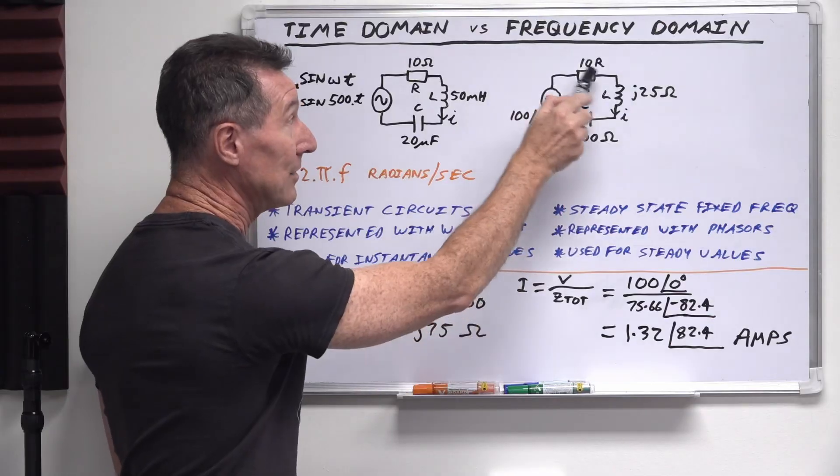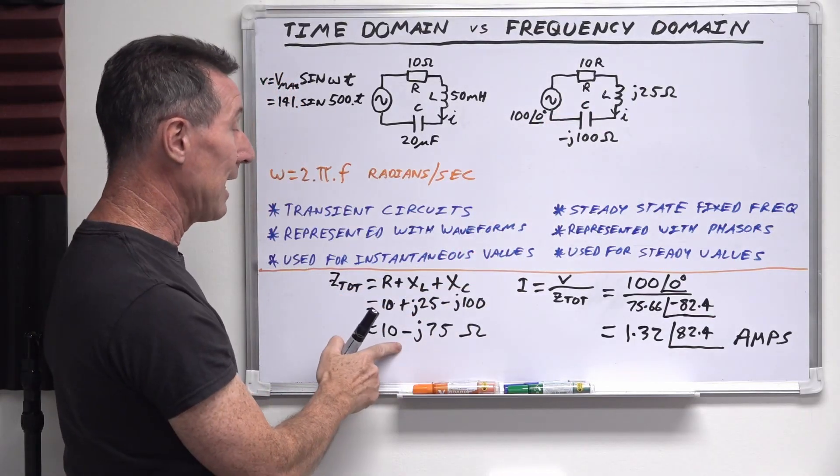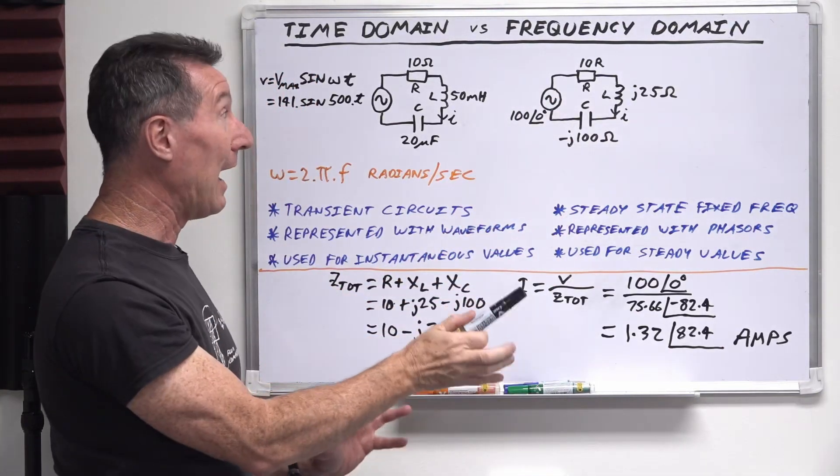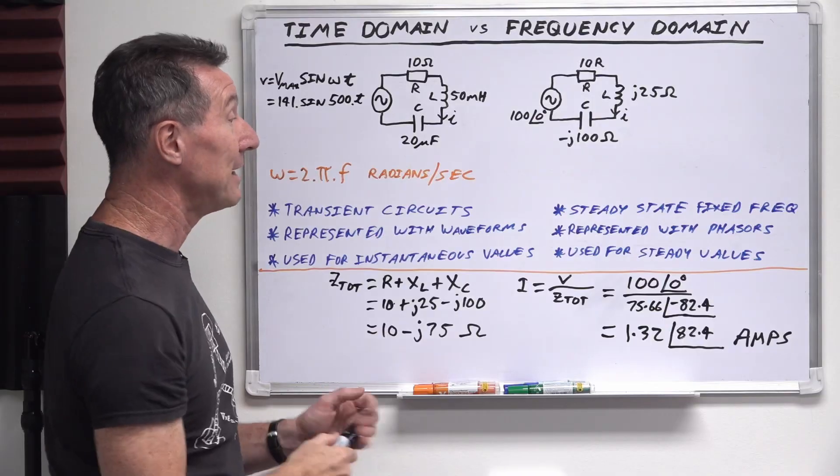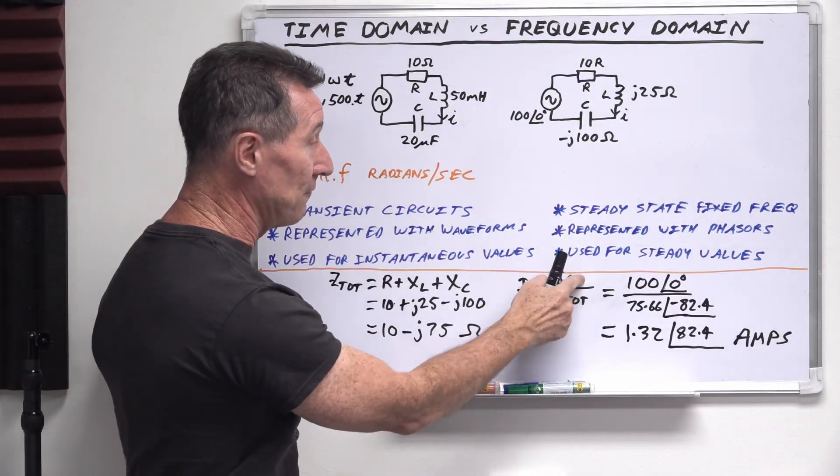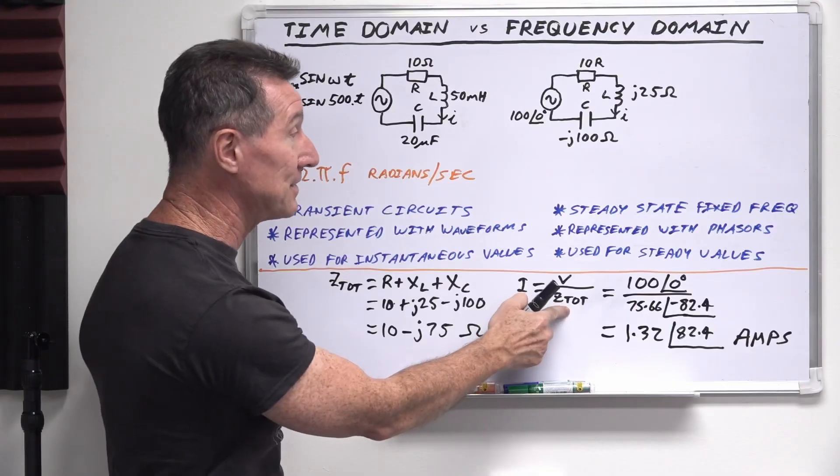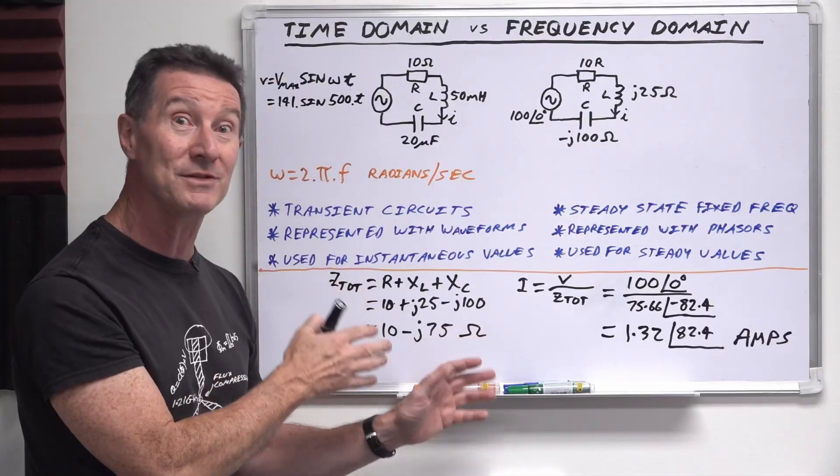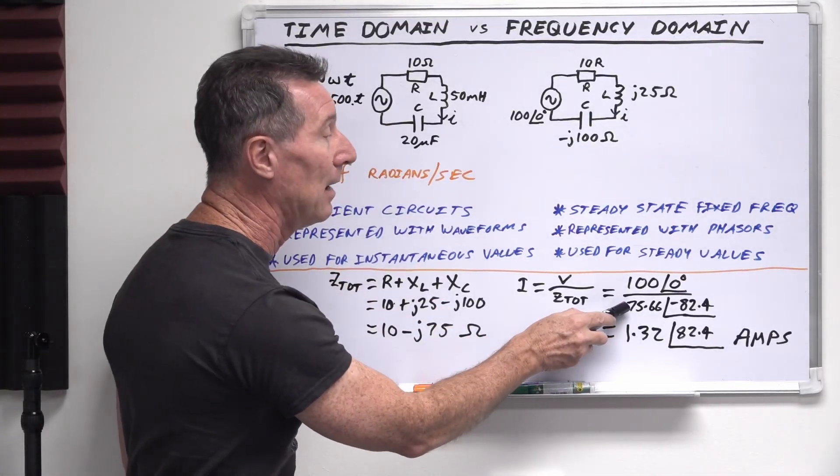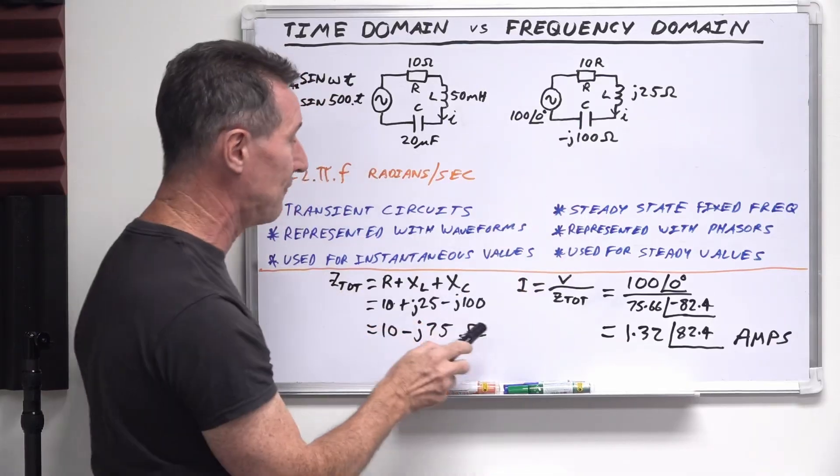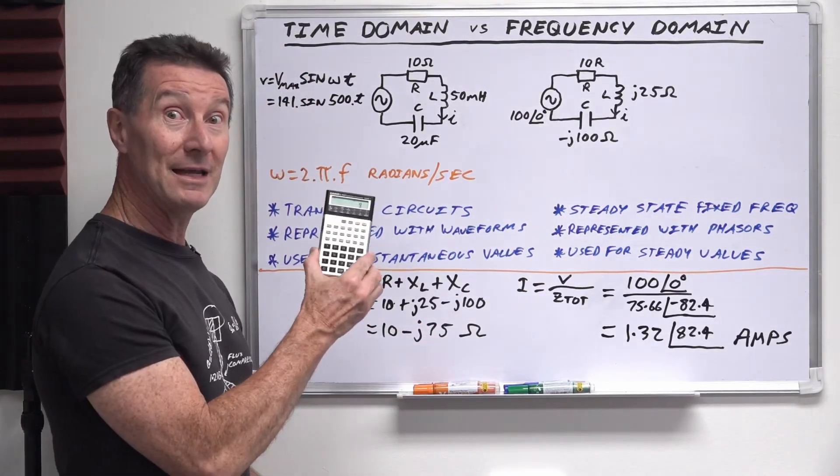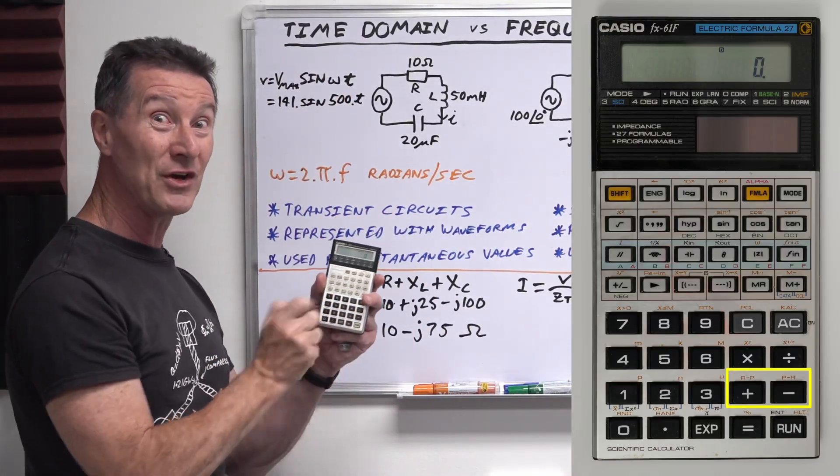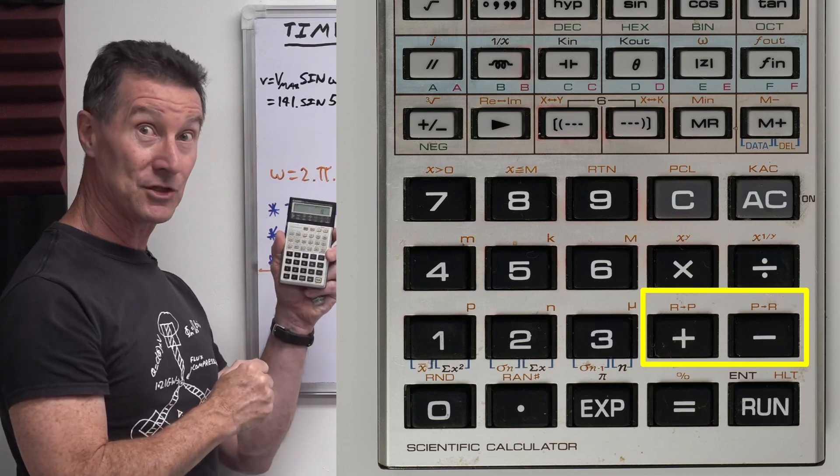So our total impedance for that circuit is 10 minus J75 ohms. So our circuit current flowing through is just V on R, or voltage divided by the impedance. So I equals voltage divided by the total impedance here. And we've got these in polar form. Remember from our complex number video, when you want to divide numbers, it's easier to have them in polar form like this than is to have in rectangular form like this. So what I've done is use my confuser here, which has, that's what those R to P and P to R buttons on your calculator do.